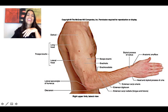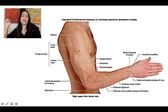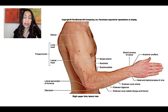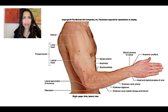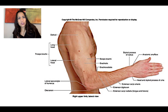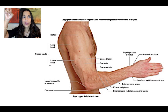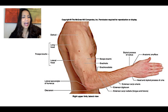That's it for the surface anatomy of the upper limb muscles. Next module, we're going to discuss the same thing but for the lower limbs. See you later!